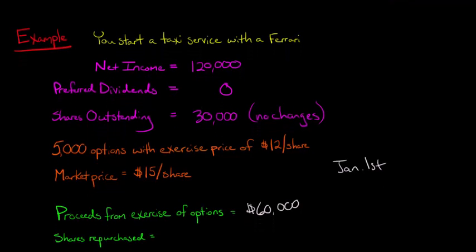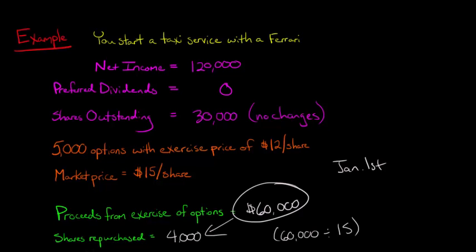According to the treasury stock method, what we're going to do is repurchase shares. We're going to use these proceeds, that's $60,000, to repurchase shares on the open market. We take that 60,000 and divide it by the market price, which is $15 a share. That's going to give us 4,000. We basically took all the money that we received as proceeds for the exercise of the options, and then we repurchased 4,000 shares out on the open market. If you're wondering where the treasury stock method gets its name, it's because we're purchasing these shares and putting them in our treasury. These are becoming treasury shares, but then we're going to give them right back to the people who exercised the options.